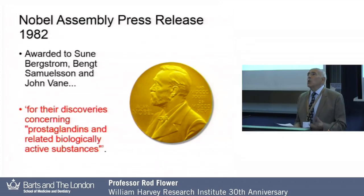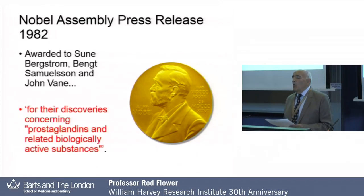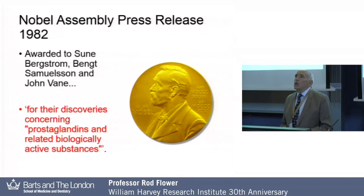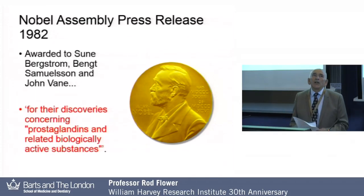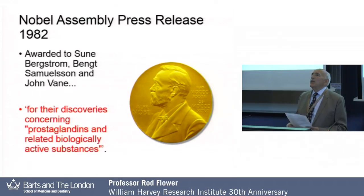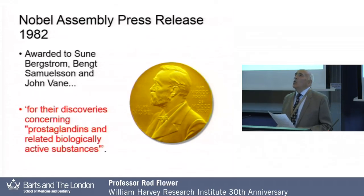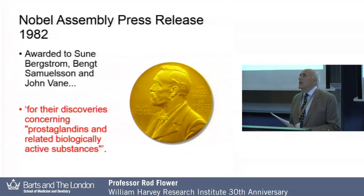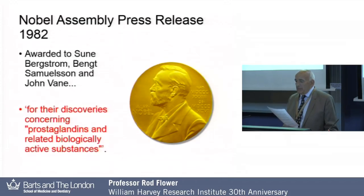In fact, there were two of them. One was called PGG2, and one was called PGH2. And this was an astonishing achievement, and really revolutionised the field, because armed with these unstable intermediates, a whole series of new compounds were discovered in various tissues, including platelets.